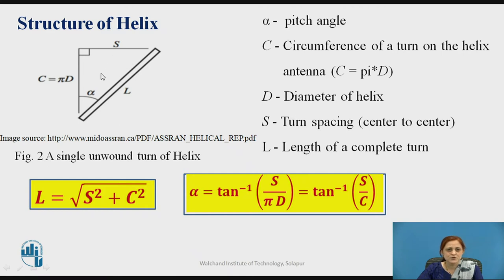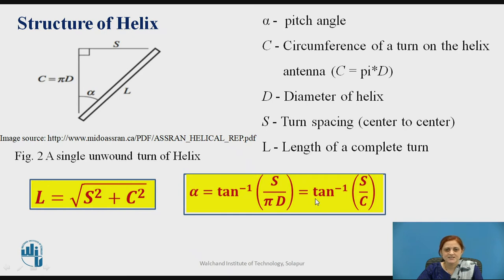By using the Pythagorean theorem, you can write the equation for the length of the helix. It is given by the square root of S squared plus C squared. The pitch angle alpha can be calculated by taking the tangent value: tan alpha equals the opposite side by adjacent side, that is S upon C, where C is given by pi times D. So alpha equals tan inverse of S by pi D, or equivalently tan inverse of S upon C. This is the structure of the helix antenna.